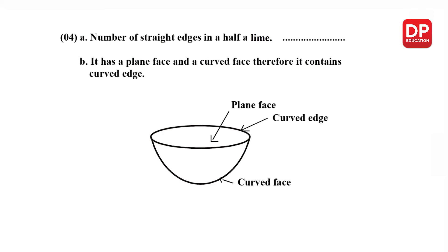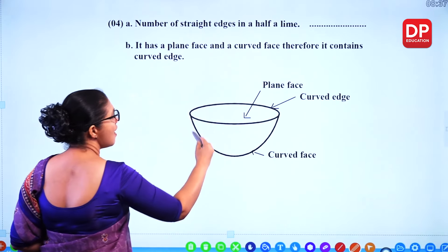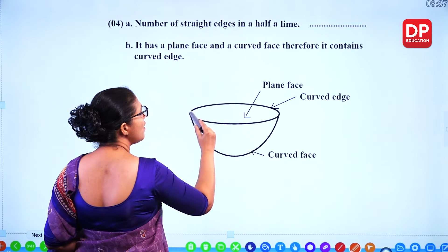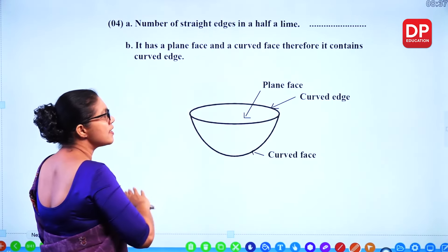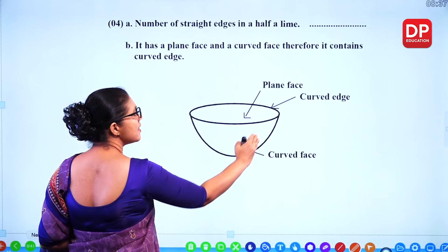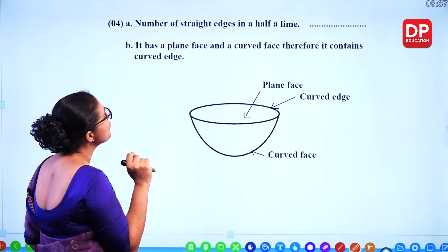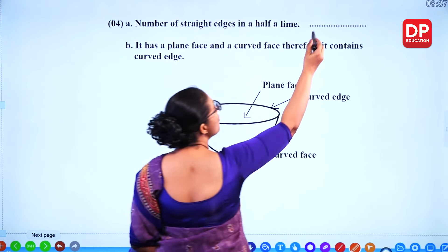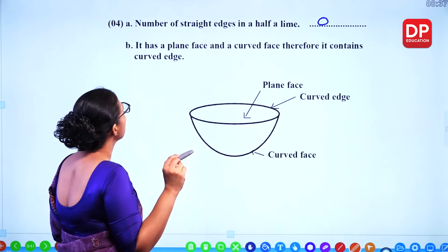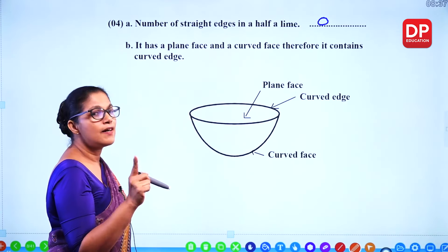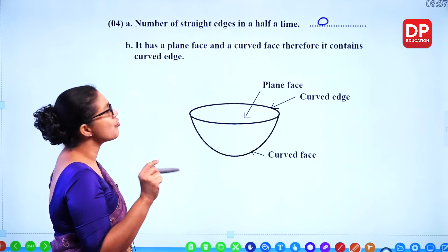Now look at this question: the number of straight edges in half a lime. Half a lime has a curved edge — it is not straight. So the number of straight edges is zero. It has a plain face and a curved face, and therefore it contains a curved edge, not a straight edge.